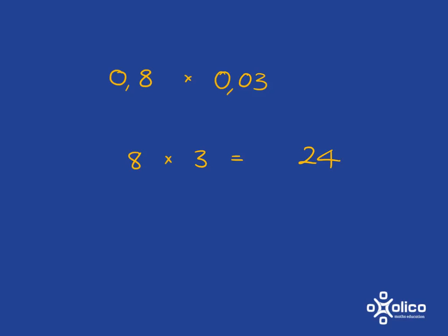So what did we do to turn 0.8 into 8? We moved that comma over. In other words, we multiplied by 10. And to turn 0.03 into 3, we multiplied by 10, and we multiplied by 10 again. So essentially, we've cheated by multiplying by 10, by multiplying by 10, by multiplying by 10.